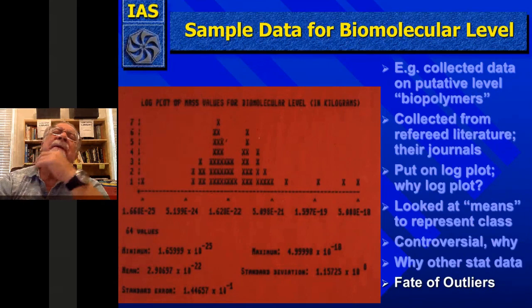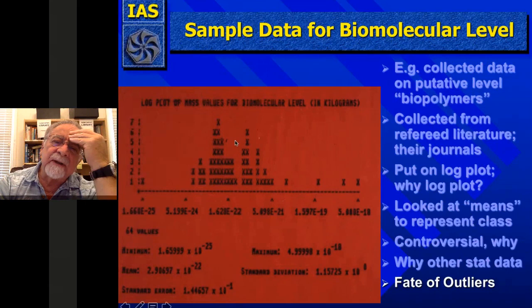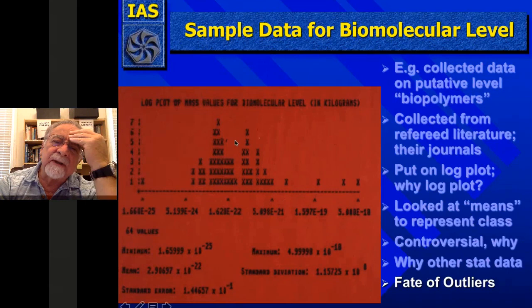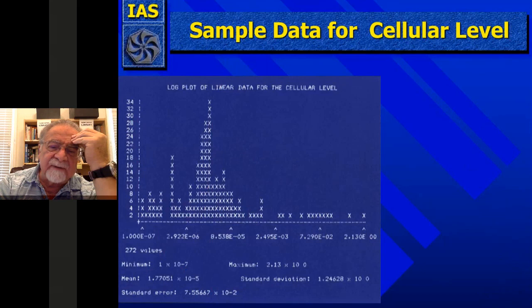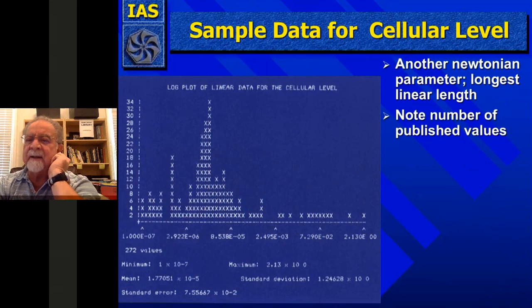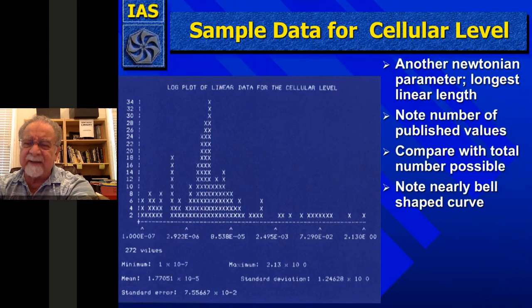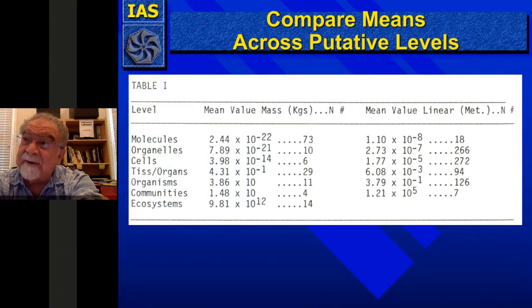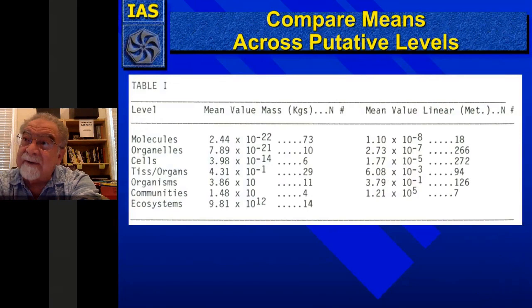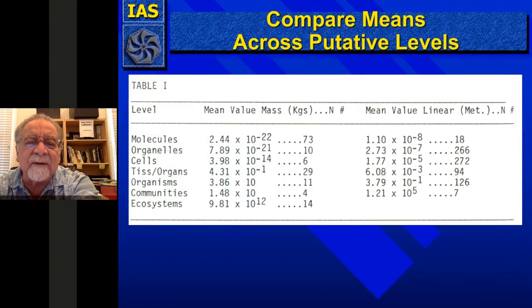We see from this that the Poisson distribution is good for capturing outliers, but it is also intra-level. Here's linear data on the cellular level — we have 272 values — and we get the mean. Again, these are from published values. One of the articles I published, which I gave in Vienna and does have an ISBN number, had a table showing the mean values and the N number for each level: molecules, organelles, cells, tissues, organisms, communities, and ecosystems — an incredible range of log values.